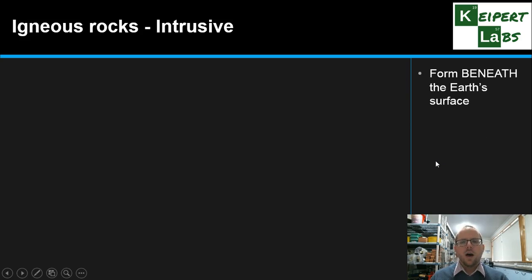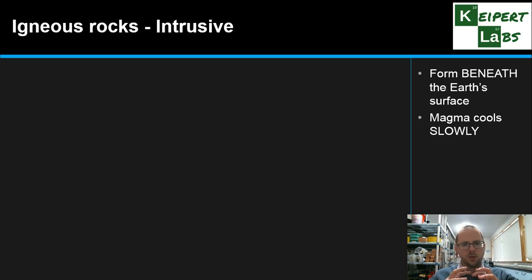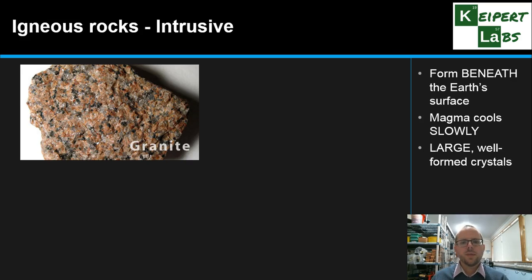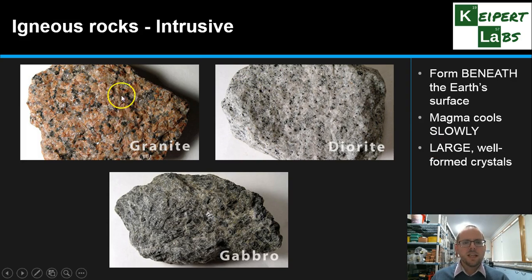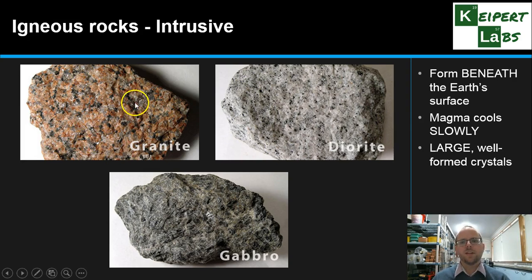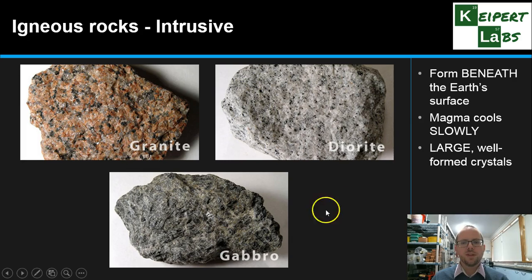Intrusive igneous rocks are those that form beneath the Earth's surface. They form when magma cools very slowly — magma that is hot and liquid, trapped underneath the Earth's surface. As a result, we get large, well-formed crystals. Examples include granite, diorite, and gabbro. Granite is very distinctive, showing large multicoloured crystals that have had a long time to grow. Depending on exactly what minerals and chemical compounds are present, you get different colours from the different components.